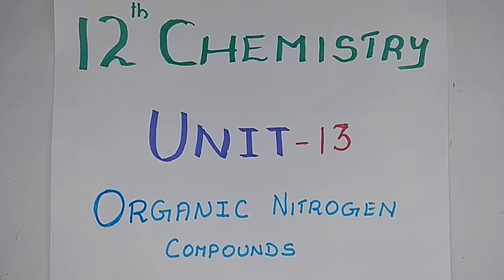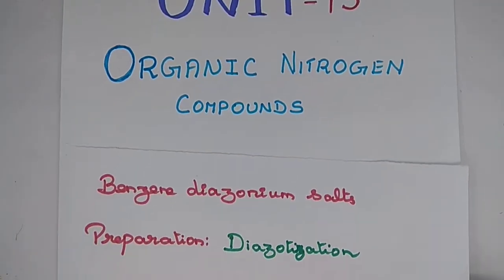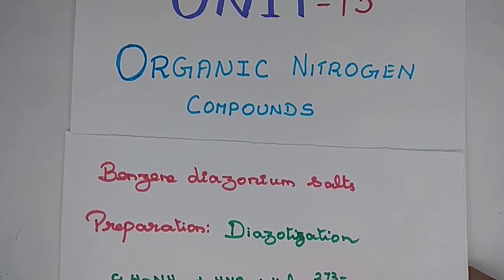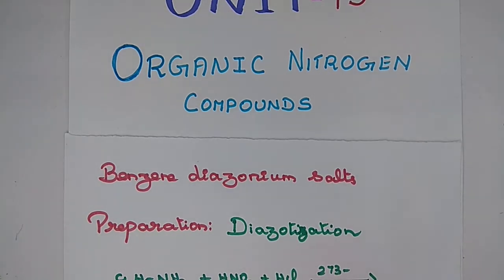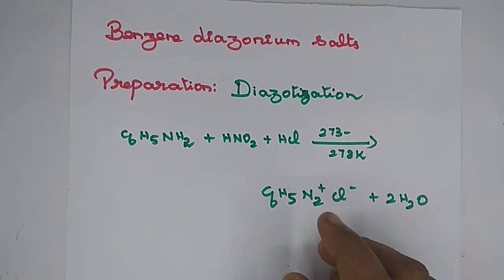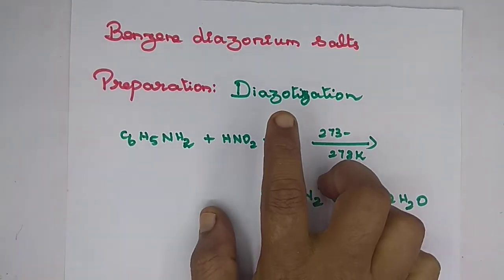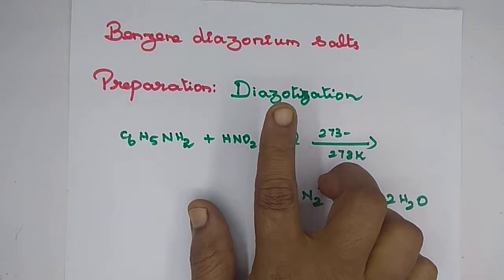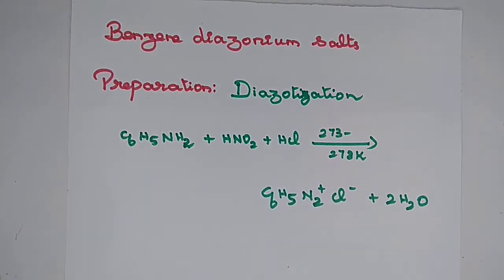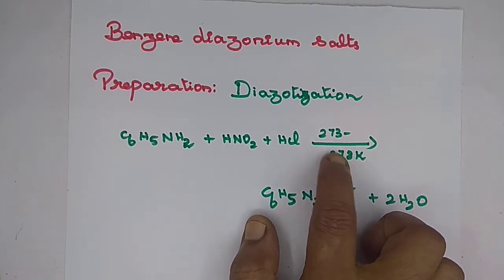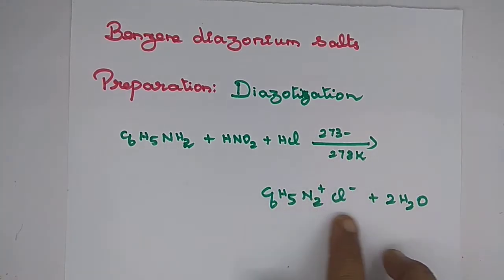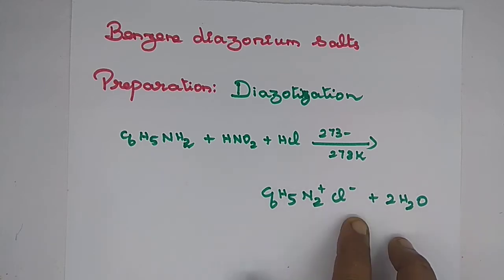Hi students, in this session we will see about the benzene diazonium salt preparation and properties. That is the process of diazotization. We have already studied this. Aniline with nitrous acid and HCl, treated at 273 to 278 Kelvin. The product formed is benzene diazonium chloride.